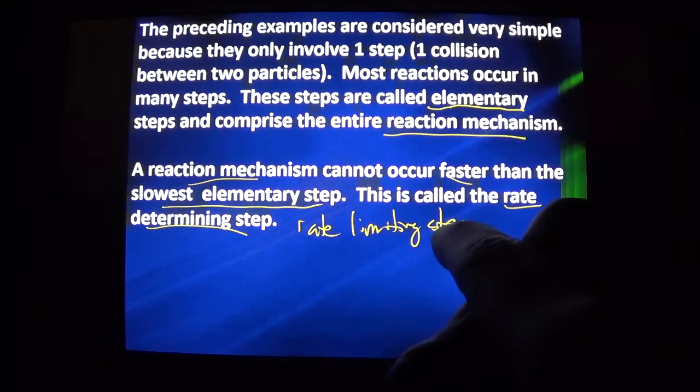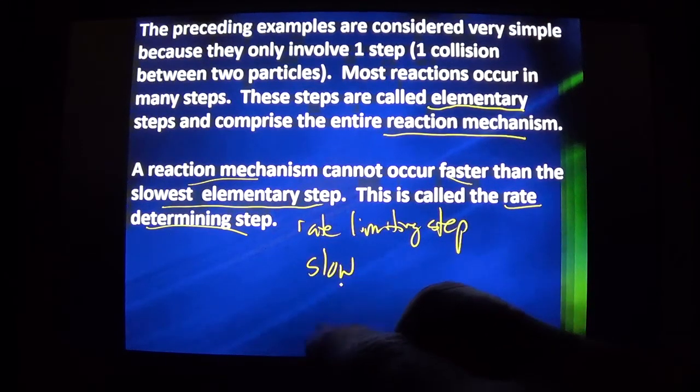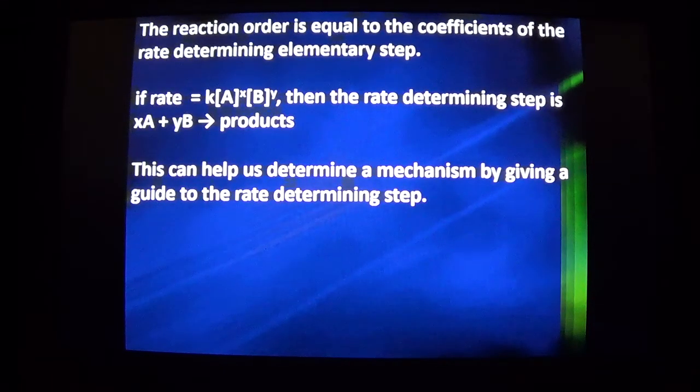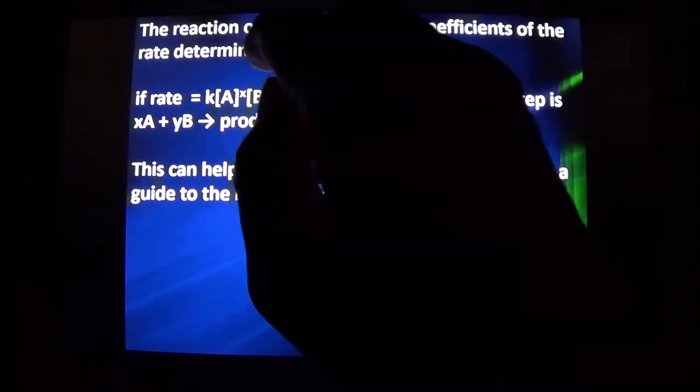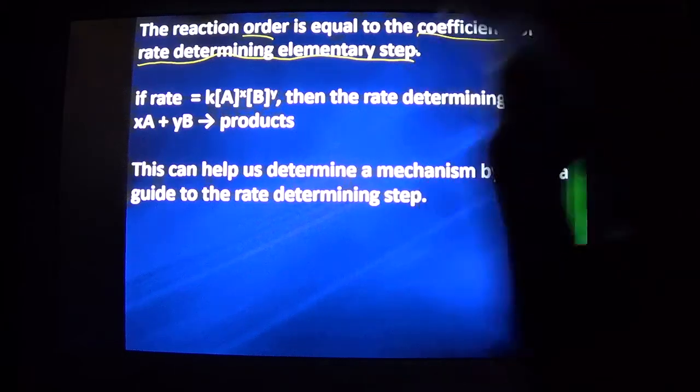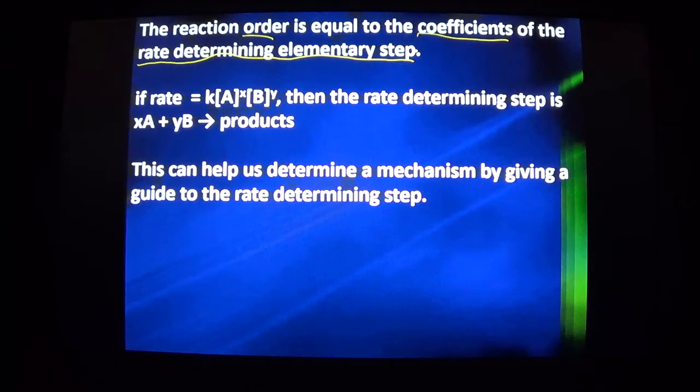Several elementary steps make up a reaction mechanism. The overall rate of the reaction mechanism will match the rate determining step. You can't go faster than that slowest step. The reaction order is equal to the coefficients of the rate determining step. All chapter long, I've been saying the coefficients in the overall balanced equation do not tell you anything about the order. Now I'm saying coefficients and order in the same sentence.